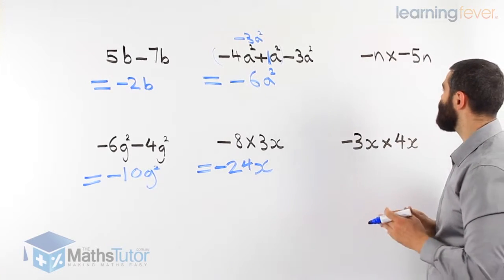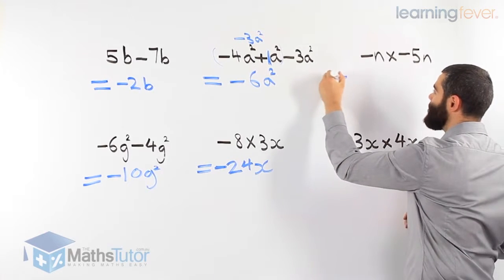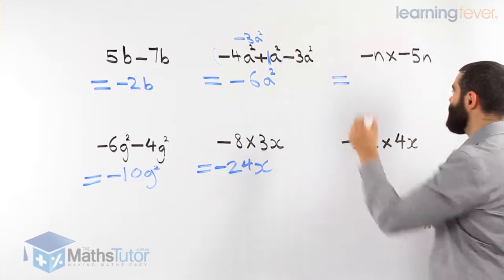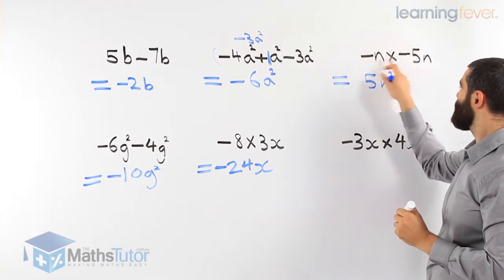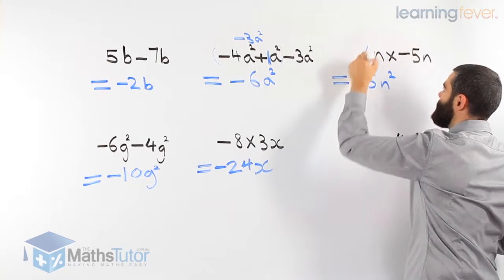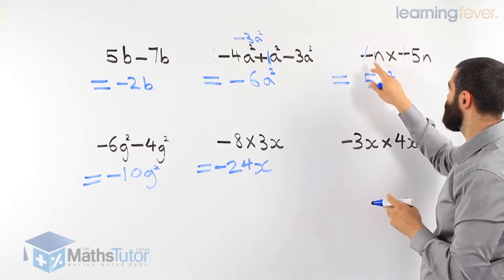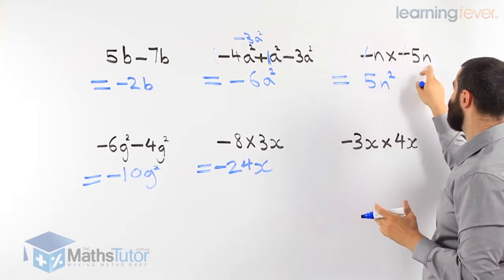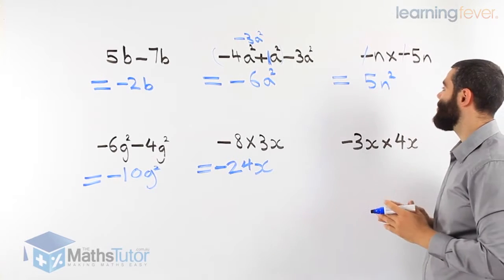Negative n times negative 5n. We have a multiplication. We know that n times 5n is 5n squared. And the two negatives — what happens to them? They cancel out, bye-bye, see you later. So our answer is positive 5n squared. When we have two negatives, they partner up and cancel out. N times 5n is 5n squared, because n times n is n squared — giving us 5n squared.